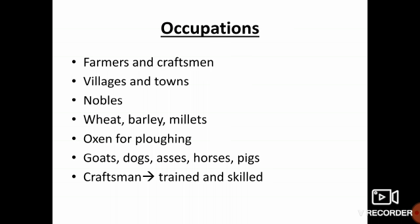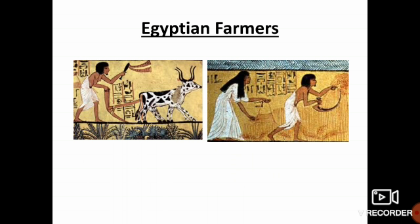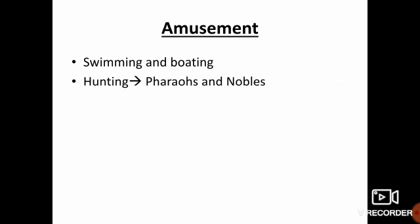They also domesticated animals like goats, dogs, asses, horses and pigs. Craftsmen in ancient Egypt were usually trained and skilled laborers. They worked in workshops and made objects for ordinary people, temples and the pharaohs. This is the image of ancient Egyptian farmers.